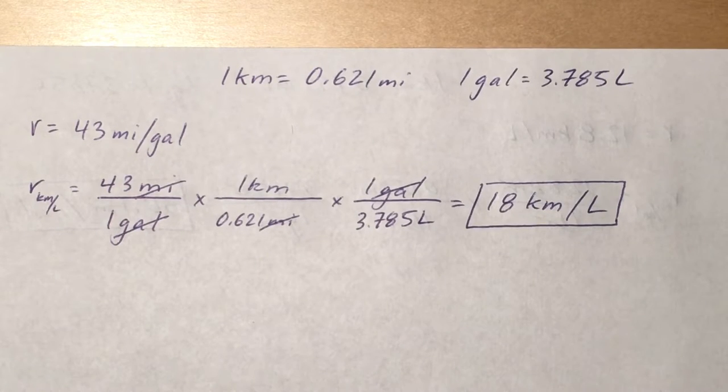Then you want to get rid of your gallons and convert them to liters, but you want it per liters. So you put the gallons on the top, liters on the bottom.